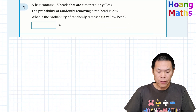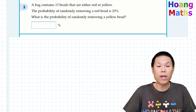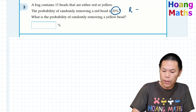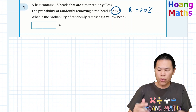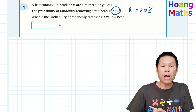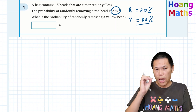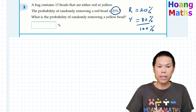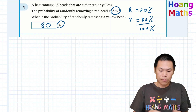Next one: a bag contains 15 beads that are either red or yellow. The probability of randomly removing a red bead is 20%. So red is 20%. What is the probability of randomly removing a yellow bead? We know that all probabilities must add up to 100%. So the yellow one should be 80%, because 100 minus 20 is 80. So the answer is 80%.